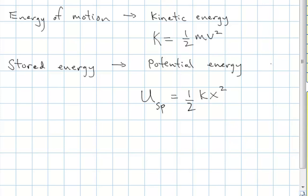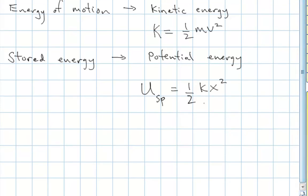I'll use SP for spring potential energy. It's one half kx squared. K is the spring constant — a very stiff spring has a big spring constant, and a soft, loose spring has a small spring constant. X is the distance that the spring is stretched or compressed from its equilibrium length. Some springs you can compress, some you can stretch, and some can go either way.